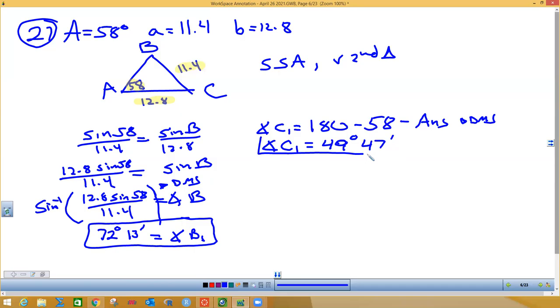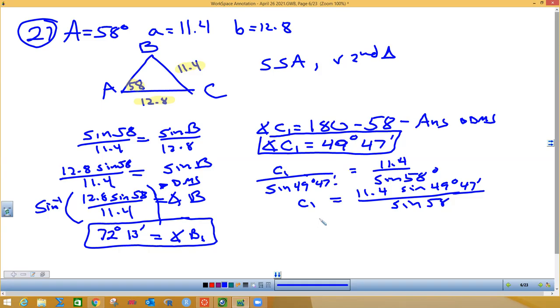49 degrees 47 minutes. There's my angle C. Now we want little c1 is to the sine of 49 degrees 47 minutes, but we're going to use the rest of it. We're going to use the given 11.4 is to sine of 58. We're not going to hit second because we're looking for a side. So little c1 is going to be 11.4 times the sine of that angle you got on your calculator, not rounded, divided by the sine of 58.